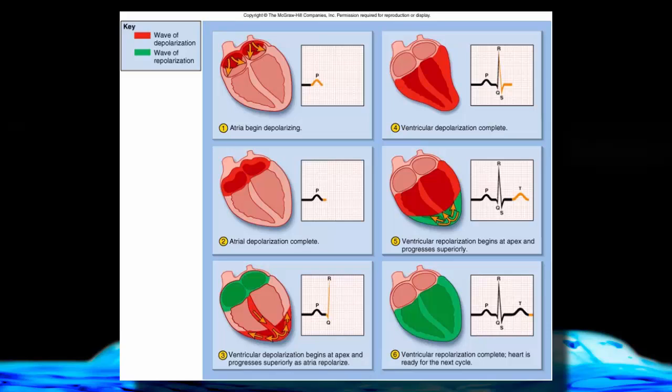Once the atria are depolarized in box number two, the atria will contract. And pretty quickly after that, the atria will begin to repolarize as you can see in box three. In the meantime, the ventricles have depolarized, and the wave of depolarization is being shown here as traveling downward and toward the left.